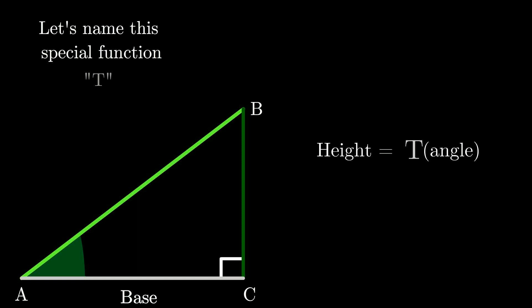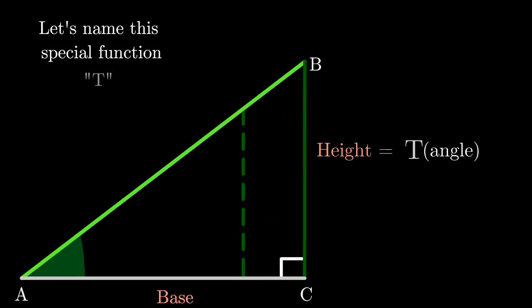But what if the triangle is something else? As in, what if the base of the triangle is larger or smaller? Notice that when we increase the base of the triangle, the angle remains the same but we get a different height. This means that our T function won't work anymore. For example, if I put in 30 degrees inside the function T and I get 20 centimeter for the height, then for the new triangle, the angle is still 30 degrees and the T function still gives 20 centimeters but the actual height is much larger, maybe even 30 centimeters. So what's the matter, why is it not working?